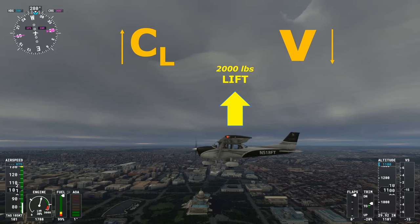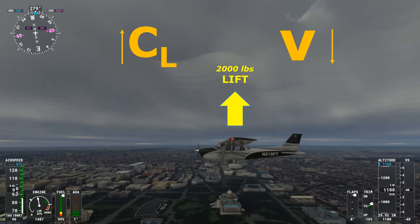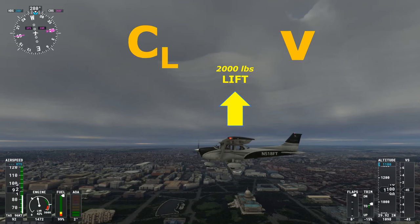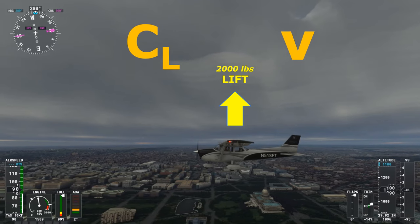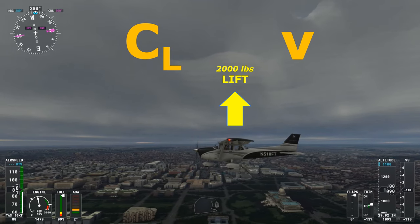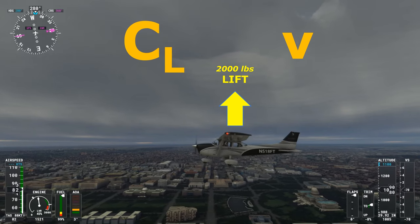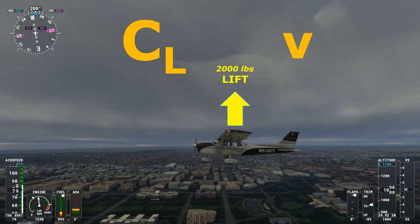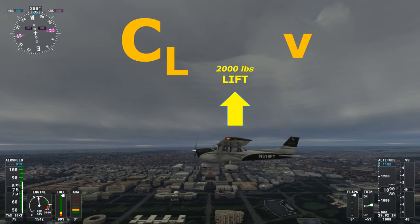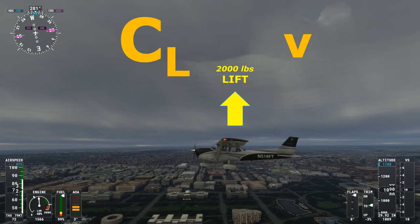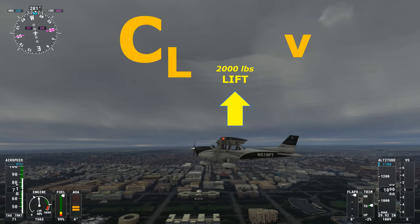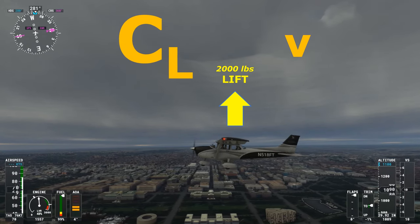If we want to maintain altitude and keep the 2,000 pounds of lift while slowing down, our coefficient of lift must increase by increasing angle of attack. We'll be slowly pitching up. As the aircraft's speed reduces, the angle of attack and coefficient of lift need to increase. At no point have we changed the amount of lift we're generating, which is why our altitude remains constant at 1,100 feet.